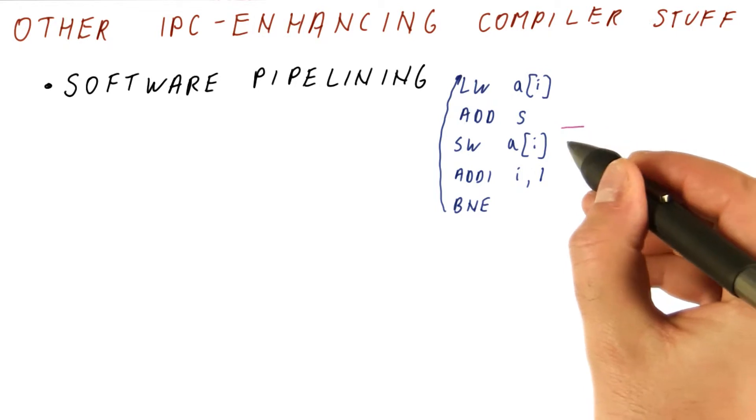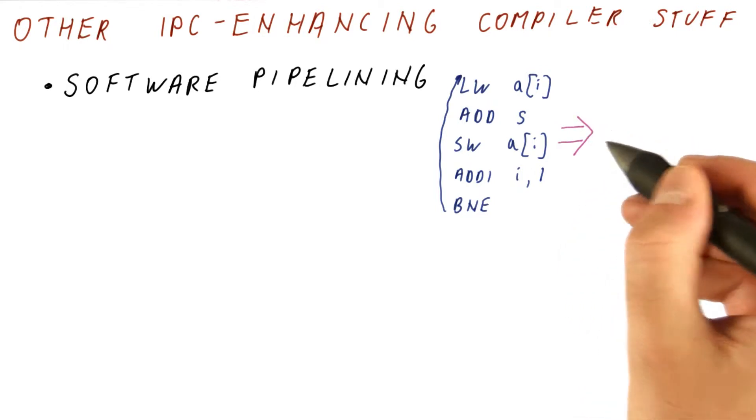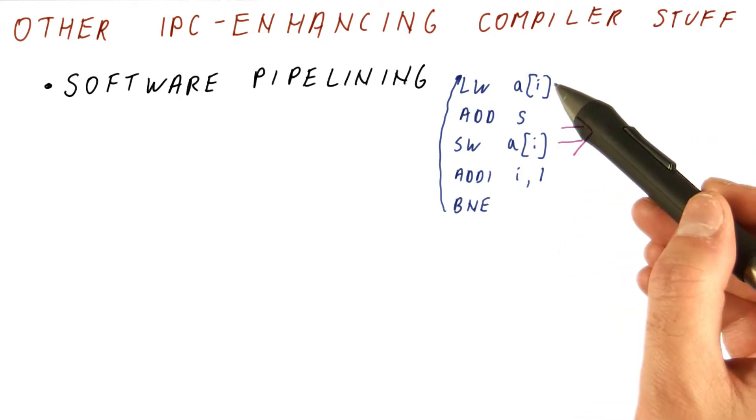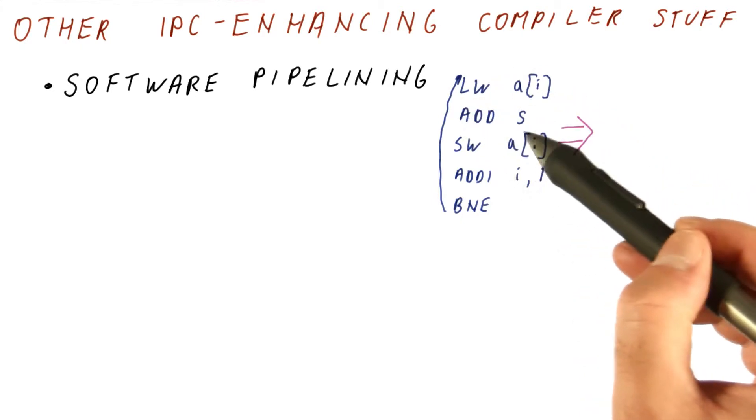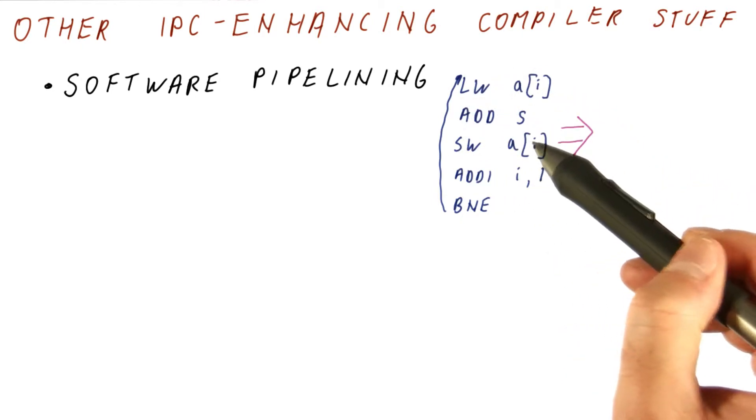Again, I'm not going to discuss this technique completely, but the idea of it is to treat the loop as a pipeline where this is the first stage, this is the second stage, this is the third stage, and so on.